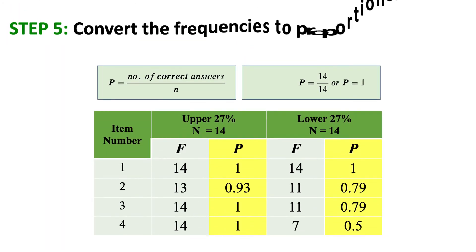Step 5: Convert the frequencies to proportions by dividing the number of correct answers by the number of scores in the upper and lower groups. For item 2, divide 13 (students from the upper group who got the item correct) by 14 (total students in the upper group), giving a proportion of 0.93. To get the proportion for the lower group, divide 11 by 14, giving 0.79. Do the same with the rest of the items.